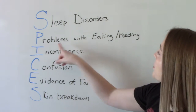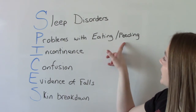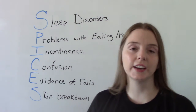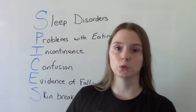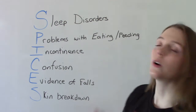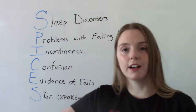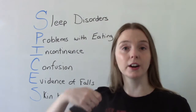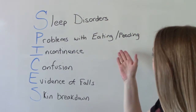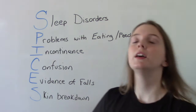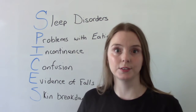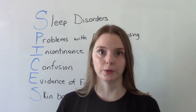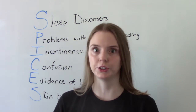P is for problems with eating or feeding. This can include things like dysphagia — difficulty swallowing — or coordination issues. Maybe they have arthritis, maybe they have Parkinson's, or something else causing them to have a hard time feeding themselves or swallowing. They may be a choking risk or an aspiration risk.